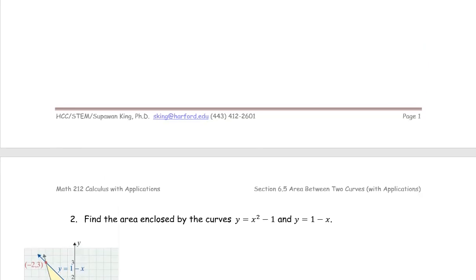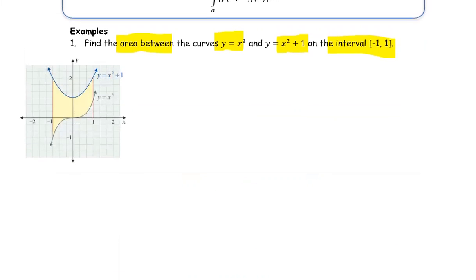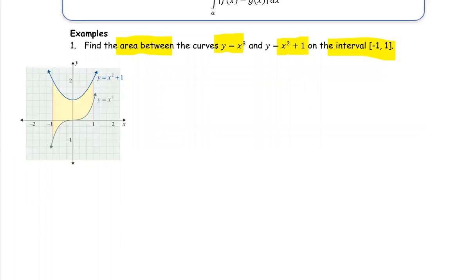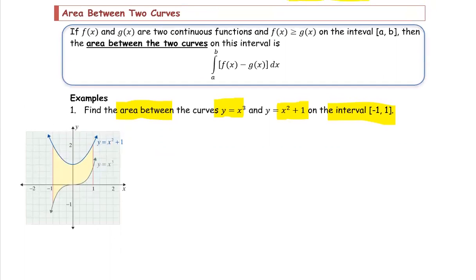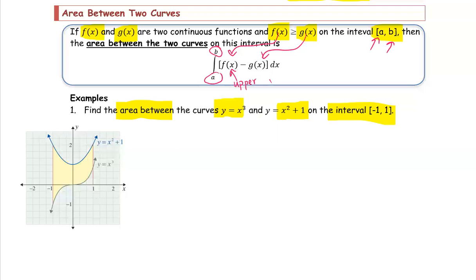The first part is getting started with skill problems to use definite integration to find the area between two curves. The two functions f and g are both continuous. If one function is above the other, its function value is greater over the interval [a, b]. The area between the two curves uses the top function — the greater one — first, subtracted by the lower one. The bounds go from point a to point b, lower limit a, upper limit b.